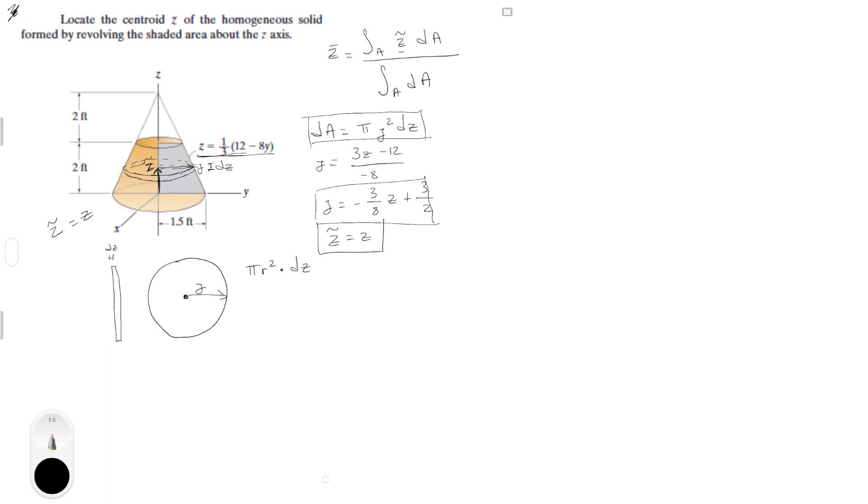So, our integral is equal to the integral from 0 to 2 of C curly, which we are going to replace for C right here, times DA which we are going to replace for this right here, which is pi Y square DC all over the integral from 0 to 2 of pi Y square DC.